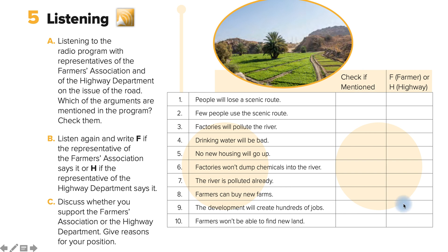Let's check the arguments that are mentioned in the program: people will lose a scenic route; factories will pollute the river; drinking water will be bad; factories won't dump chemicals into the river; farmers can buy new farms; and development will create hundreds of jobs.